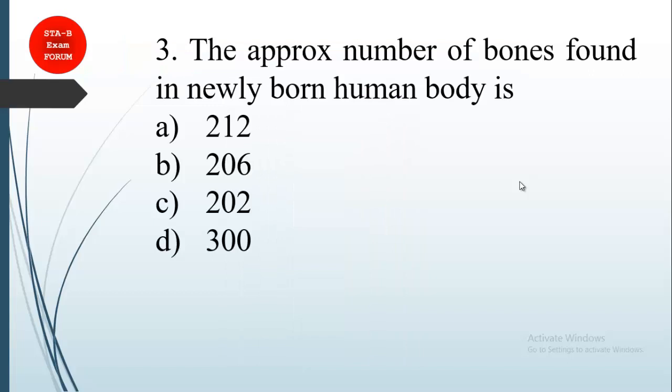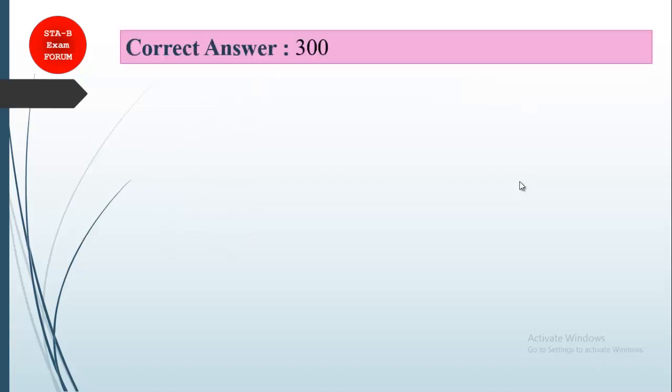The next question is about the approximate number of bones found in a newly born human body. This is very simple, and all of you must know that 300 bones are present initially when a baby is born.